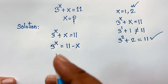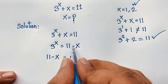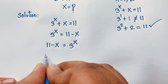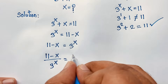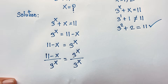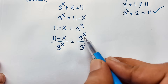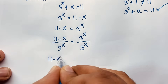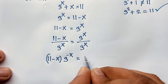Now 11 minus x is equal to 3 to the power x. I divide both sides by 3 to the power x, so it will be: 11 minus x over 3 to the power x is equal to 1. The 3 to the power x on the right cancels, giving 1. So it will be: 11 minus x times 1 over 3 to the power x — and we know that 1 over 3 to the power x equals 3 to the power negative x — is equal to 1.